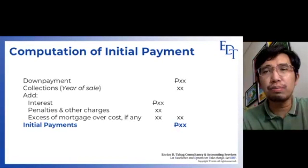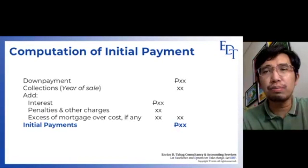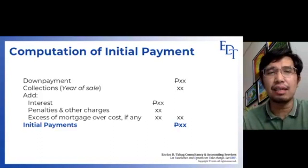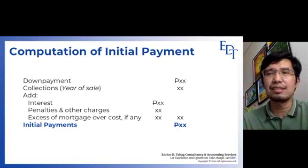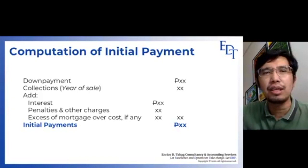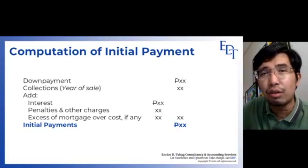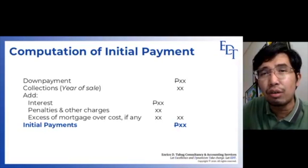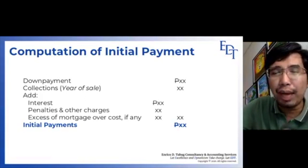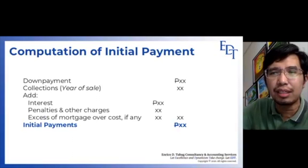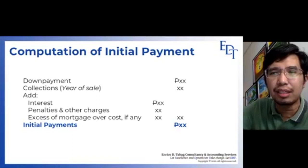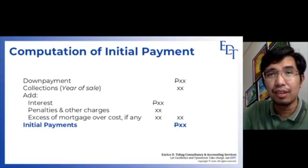Initial payment is composed of: (1) your down payment, (2) all collections during the year of sale, and (3) if applicable, penalties, interest, and excess of mortgage over cost. Add all of those together and that will be your initial payment. If the sale qualifies as an installment sale, the VAT reported in the first year is based on the initial payment, and subsequent years are based on the collection. The output VAT due during the year is the initial payment multiplied by 12%.